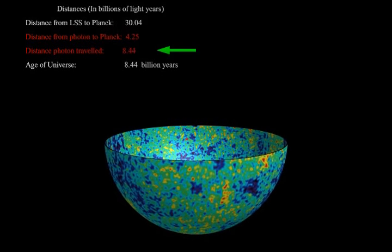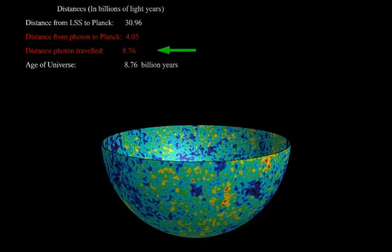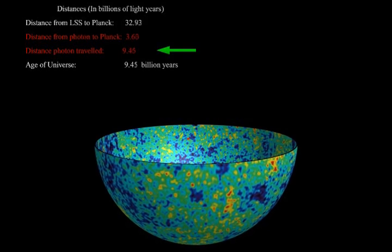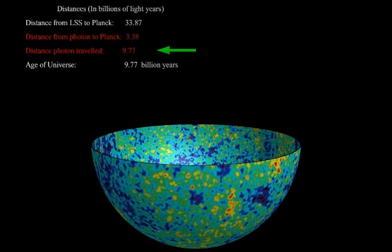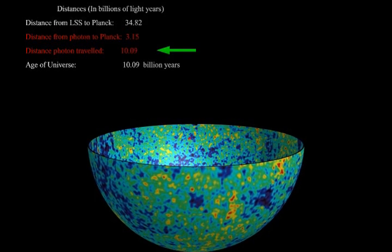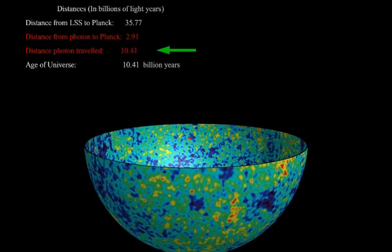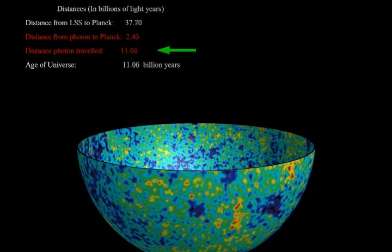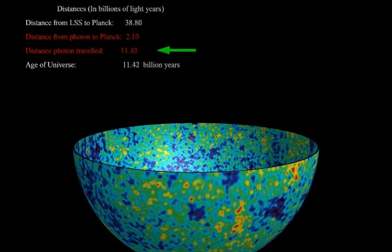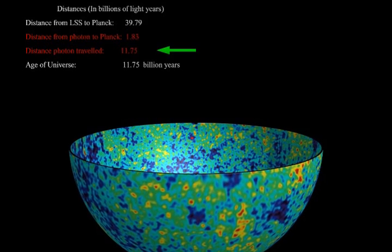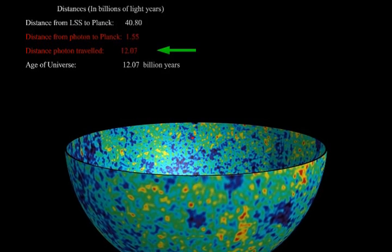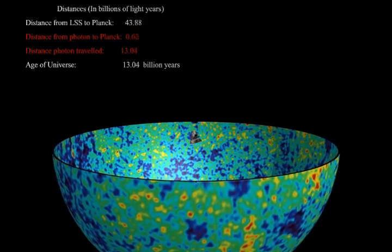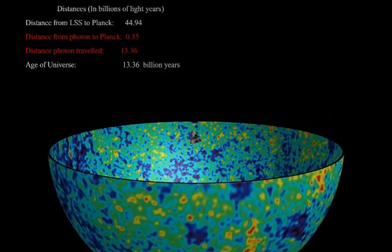The green arrow indicates the distance the photon has traveled. Although the photon started a mere 36 million light-years away from Planck, the distance the photon has traveled is a lot bigger. We see that most of the distance the photon has traveled is not the original 36 million light-years, but additional space created by the universe expanding.